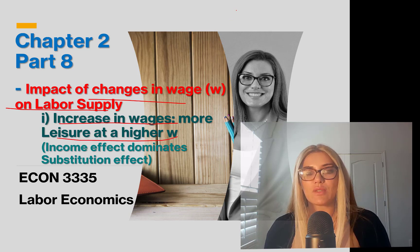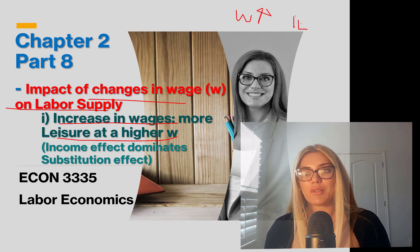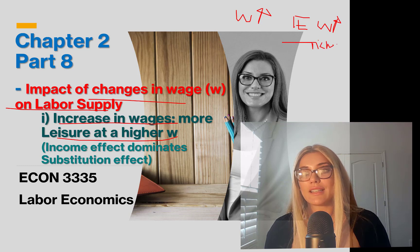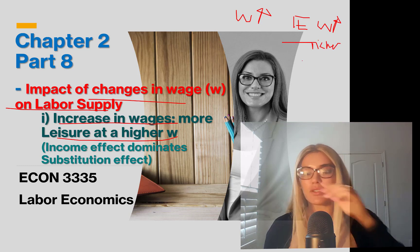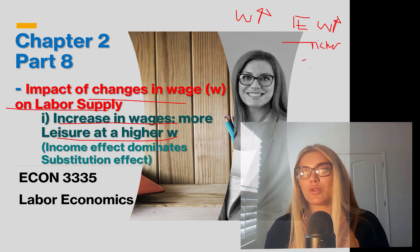So wages went up. The income effect — remember from the previous part — says that wages are higher now, so you are richer. If you're richer, you consume more consumption goods and more leisure. Both increase. This is the income effect: both will go up.